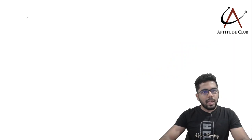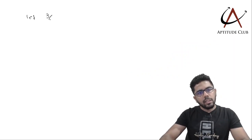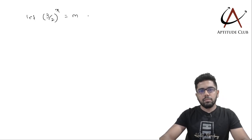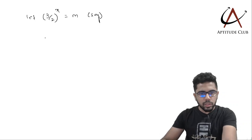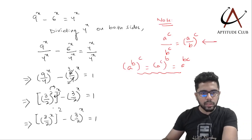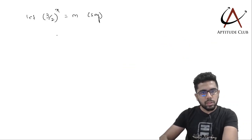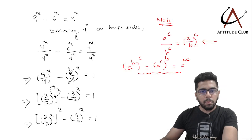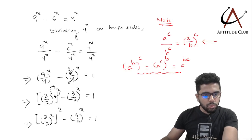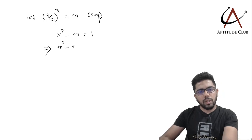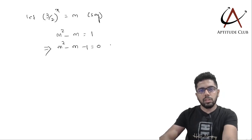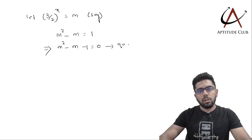Next, I'll let m equal (3/2) to the power x. So the equation becomes m squared minus m equals 1, or m squared minus m minus 1 equals 0. This gives us a quadratic polynomial, and we need to find the value of m.